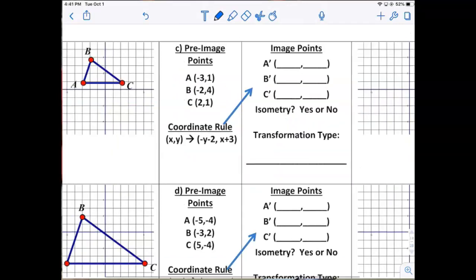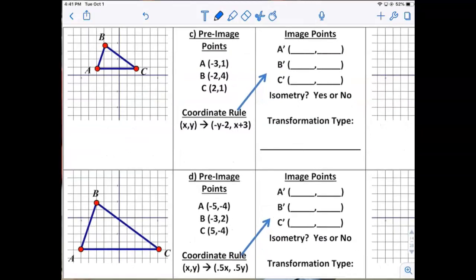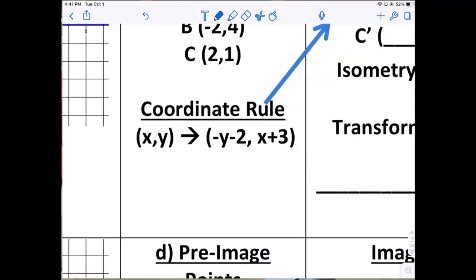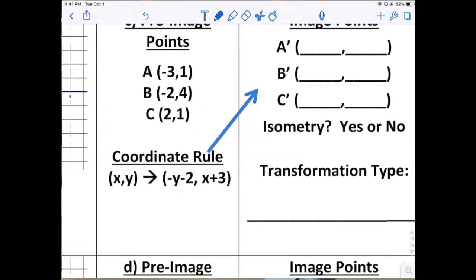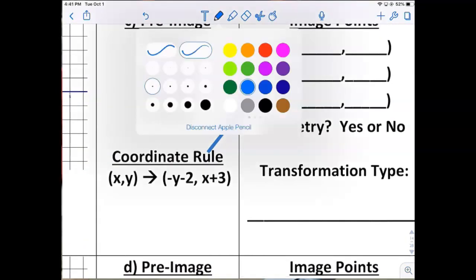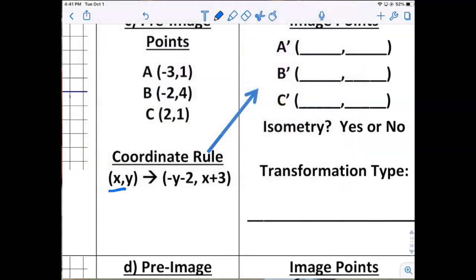Now I'm going to tackle the first one on page 14. It's pretty complicated there: negative y minus 2, and then x plus 3. Let's see what happens there. So I'm going to take my x coordinate, move it to the second position, which is the new y, and add 3 to everything. So negative 3 moves here, but then I'm going to add 3, which makes it 0.